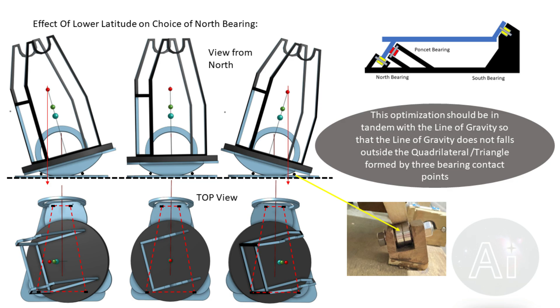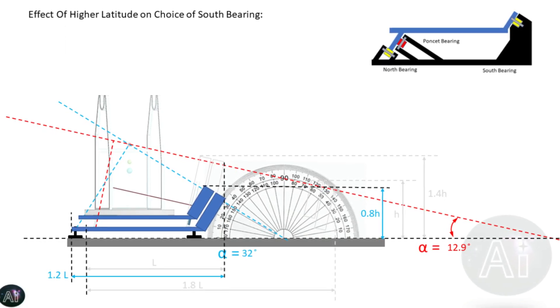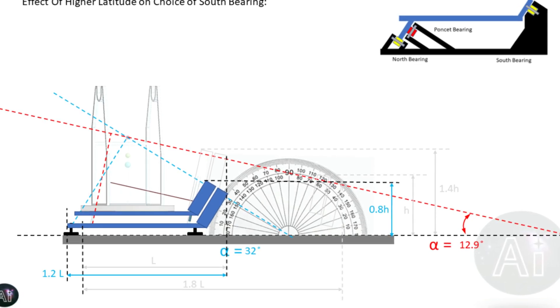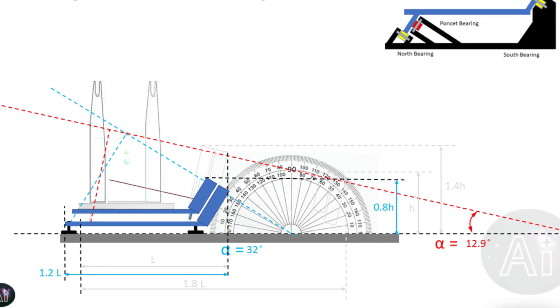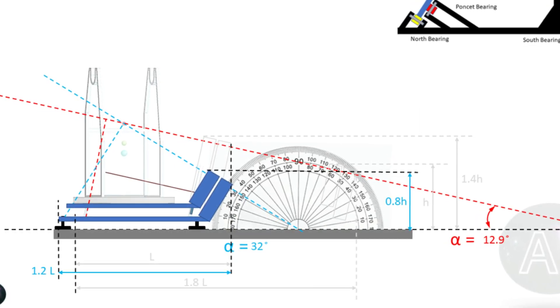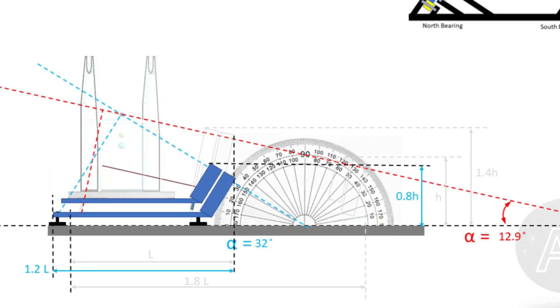Now let's take the example of 32 degrees north latitude. If you have to design the equatorial platform for a much higher latitude, you can see how without significantly increasing the length of the equatorial platform the height of the south bearing is still way lower than our initial design which was for 12.9 degrees north.